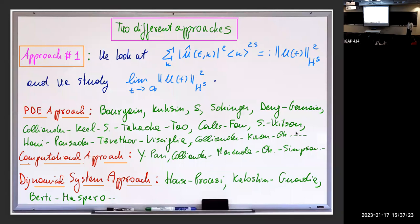Understanding this growth of higher Sobolev norms has been done mostly in a deterministic manner using PDE approaches. This is the original work of Bourgain, and then many other people. There is also computational and numerical experimentation in this direction. There is a very interesting approach from the dynamical systems point of view, with a very strong school in Italy working on this intensely. But this is not going to be the content of the talk.